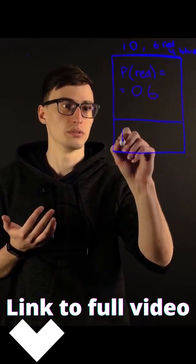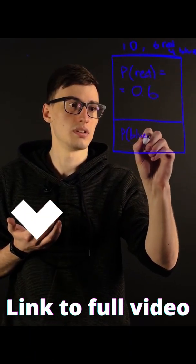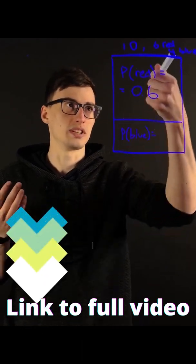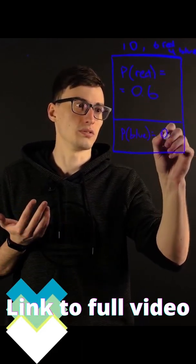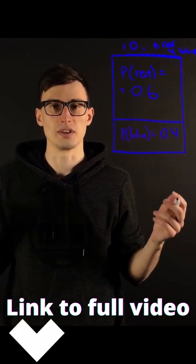So that means, obviously, P of blue is one minus 0.6, or otherwise forty percent, 0.4, right? Because there's four of them and six of the red ones. Simple, right?